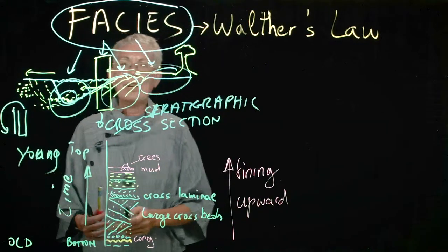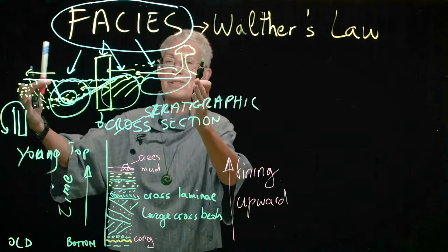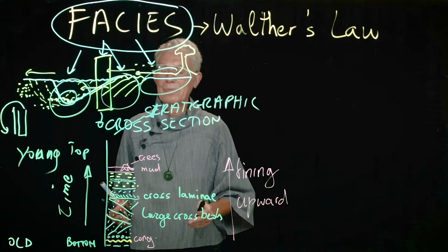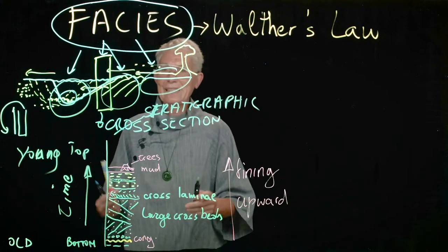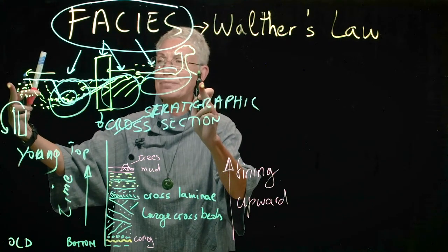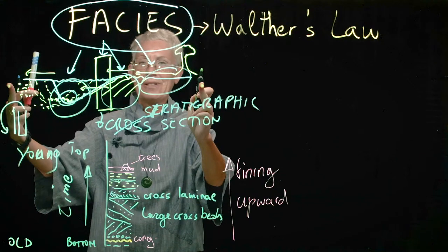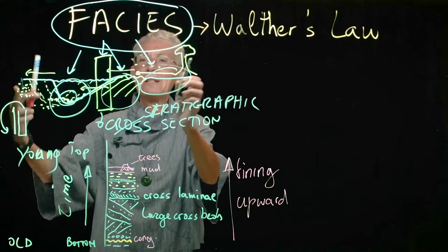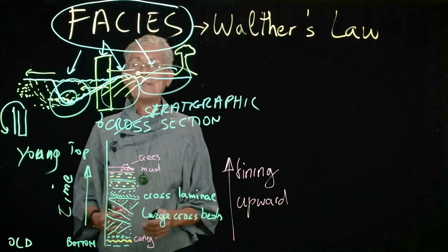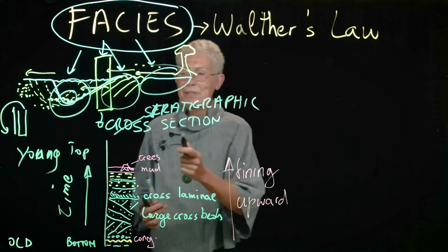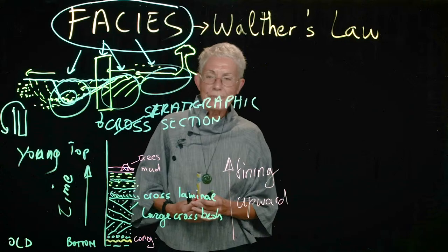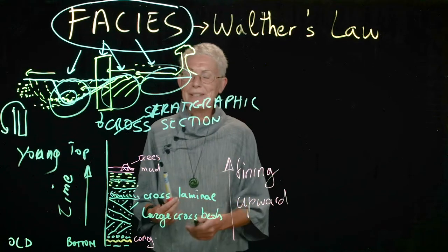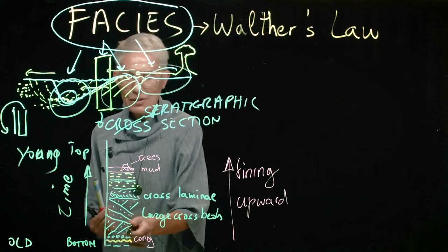So that's exactly telling you that there was the migration, lateral migration, of these sub-environments, facies, through time. And now what you find is sub-environments which were laterally adjacent at a certain time, with passing time because of this migration, now they are one on top of each other. So a meandering river, a typical stratigraphic sequence of a meandering river will be like this.